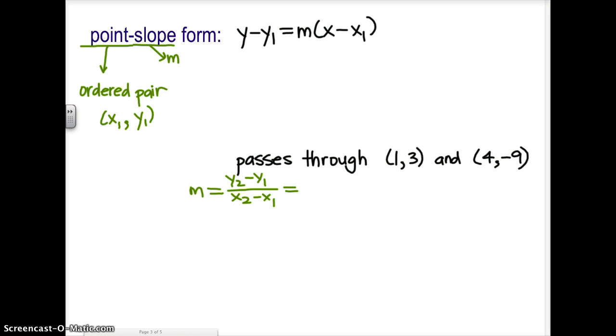Whenever you find the slope, you might find it easy to number the ordered pairs: x1, y1 and x2, y2. That will make it easier for when you actually have to plug in to the formula. y2, take away y1. Well, y2 is negative nine. Take away y1, which is three. Over x2, four, take away x1, which is one. Now when we simplify that, we get negative 12 over three, which is negative four. Awesome. We had the point to start. Now we have the slope.